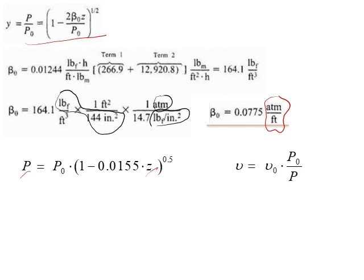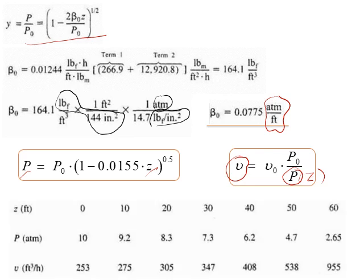And while at it, we can also calculate the volumetric flow rate, and we can calculate υ as a function of Z as well, because we have an equation for this as a function of Z. So let's do that. Let's establish a table where we vary the value of Z from the beginning to the end of the pipe, 60 feet, and calculate P at the different locations and calculate the volumetric flow rate at different locations as well.